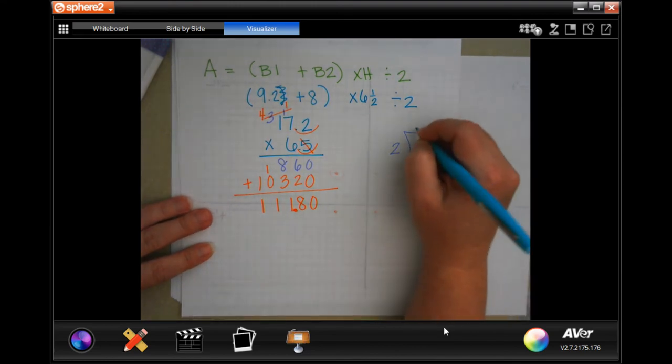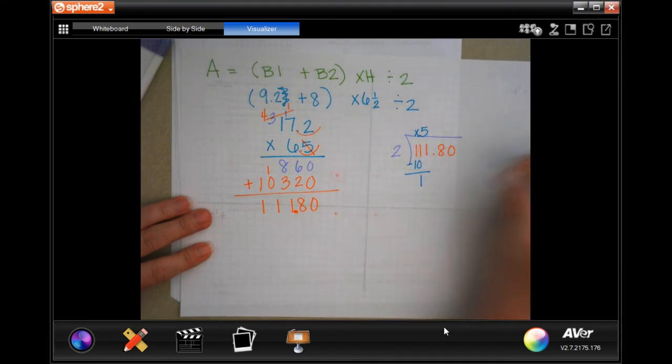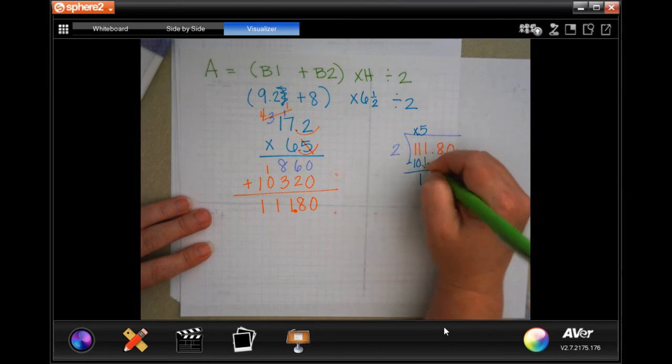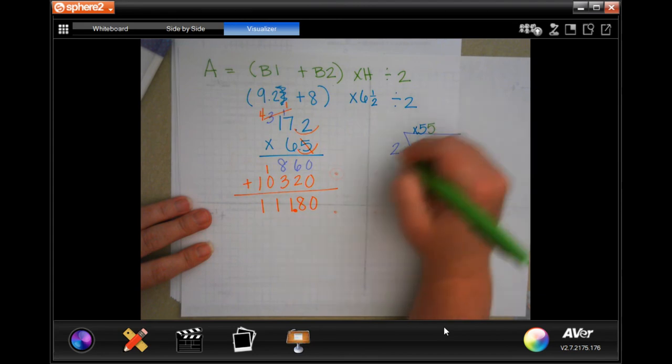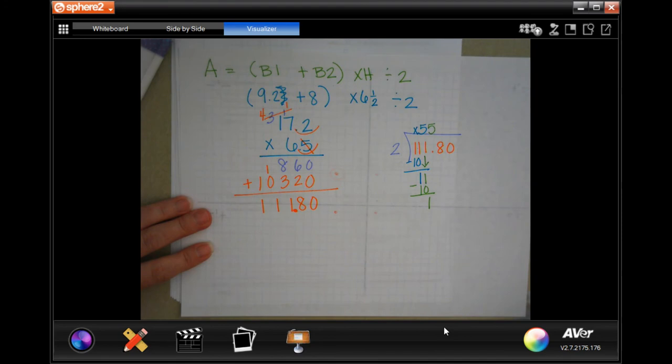Well, 2 is not going to go into 1, but it'll go into 11, 5 times. 5 times 2 is 10. Subtract. Get 1. Alright. 1 is smaller than 2. So I'm going to bring down my other 1. 2 goes into 11, 5 times. 5 times 2 is 10. Subtract. Get 1. Okay?